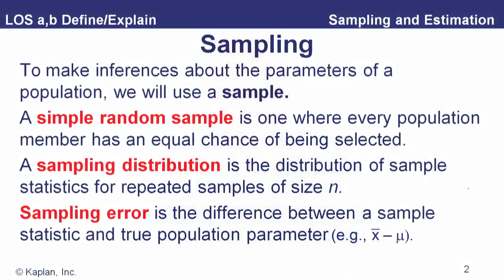Sampling error is simply the difference between the sample statistic — our sample mean, for example — and the true population mean.